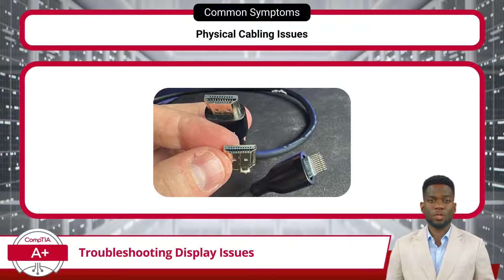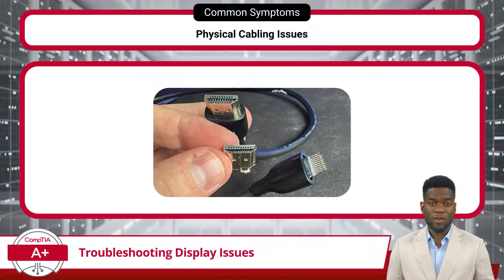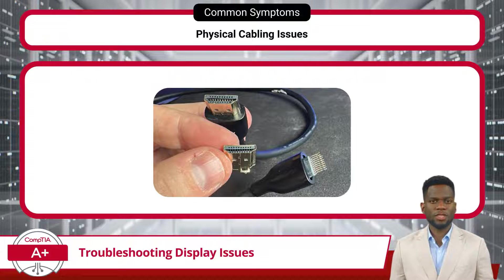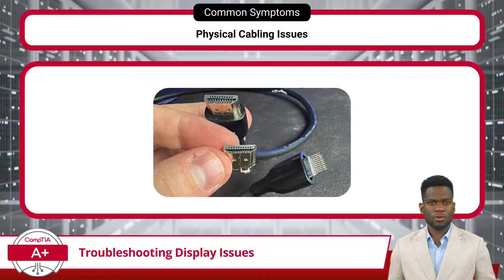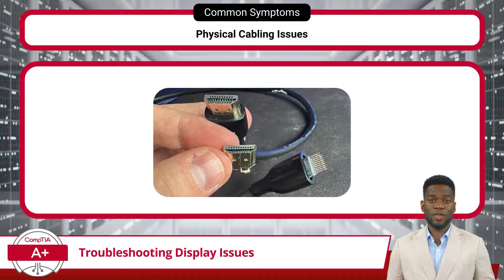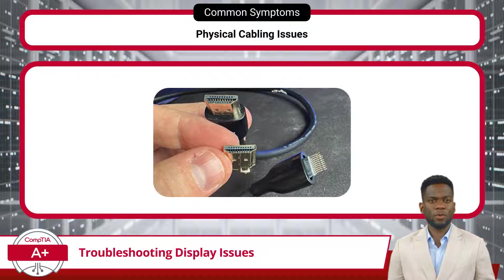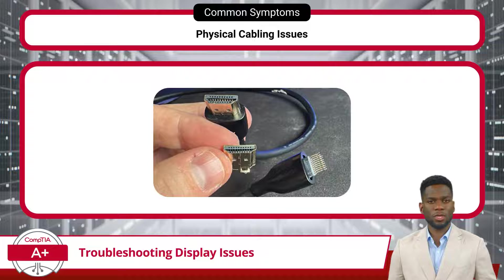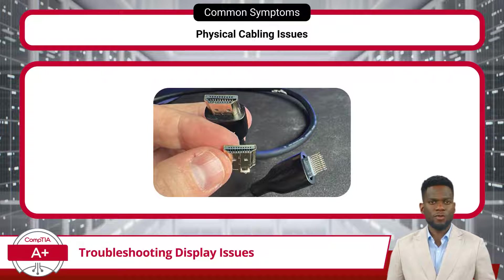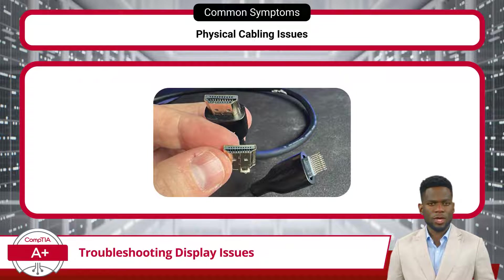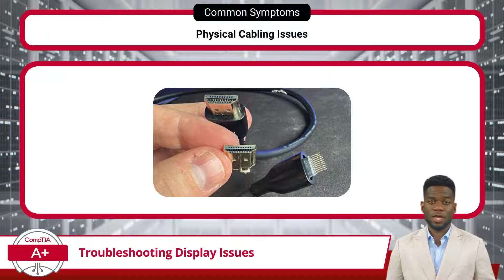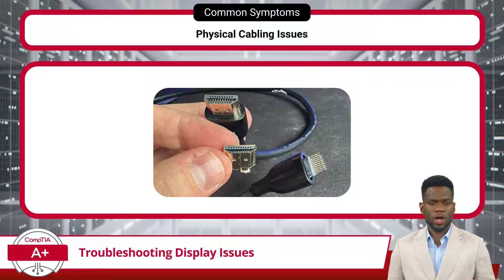Damaged physical cabling can also disrupt various display setups, leading to image and audio signal distortion or even a complete lack of signal input. These disruptions often stem from loose or damaged cables, connectors, or adapters within the system. To effectively address these issues, users need to carefully inspect all cables and connections for any signs of damage, such as frayed wires, bent pins, or worn-out connectors.